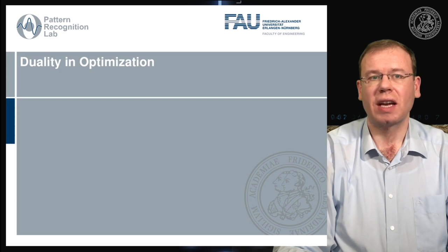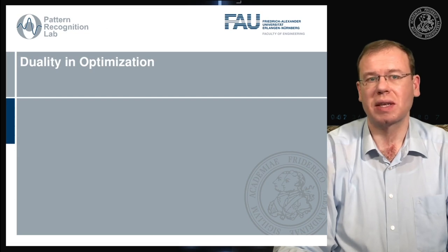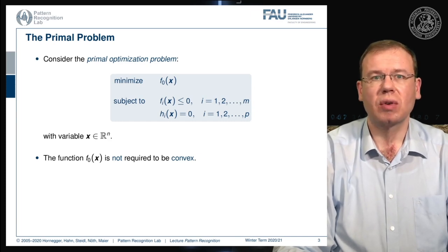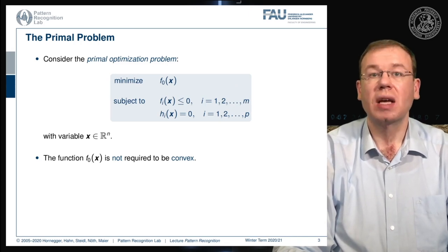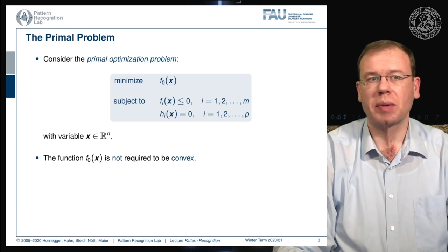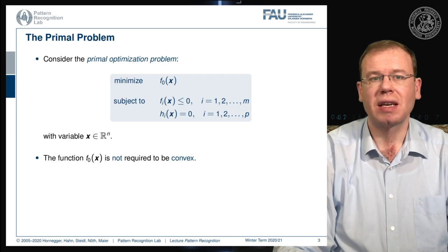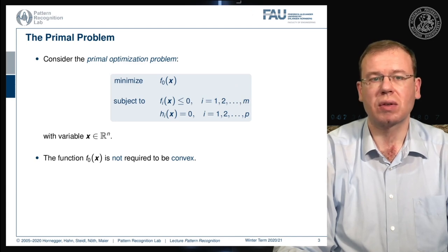Let's have a look at duality in convex optimization. To study duality we have to differentiate two problems: the primal problem and the dual problem. The primal problem is an optimization problem where we want to minimize some function f0 of x, subject to two sets of constraints: fi of x, which are inequality constraints, and hi of x, which are equality constraints.